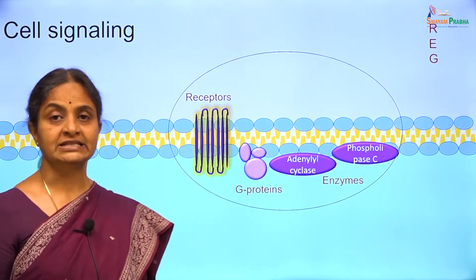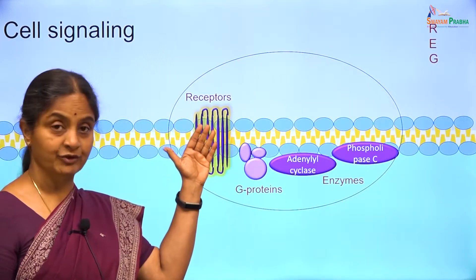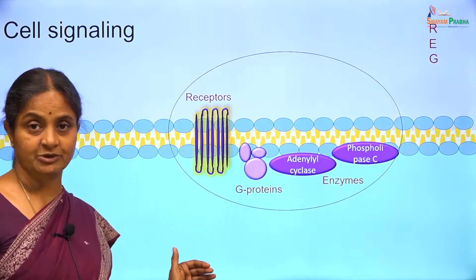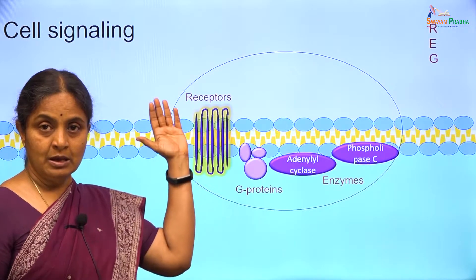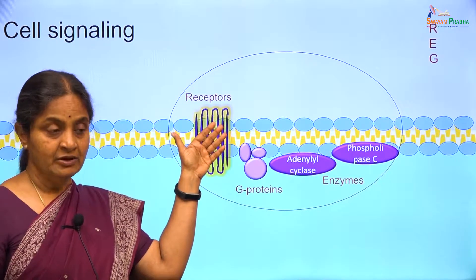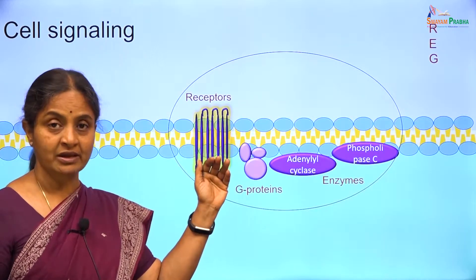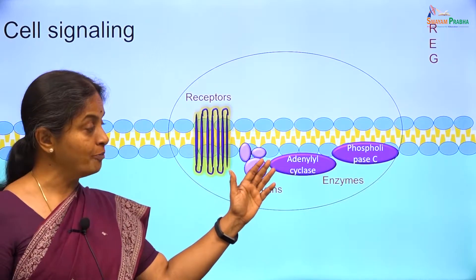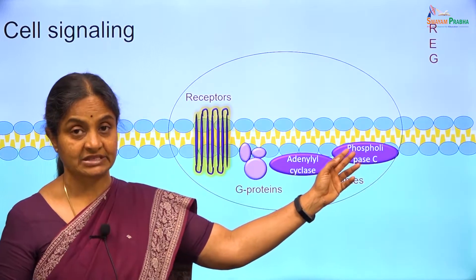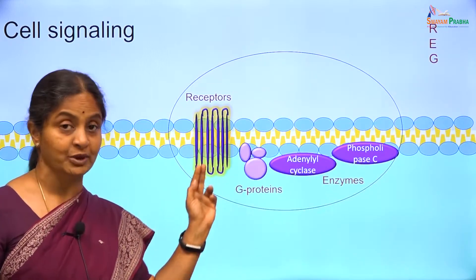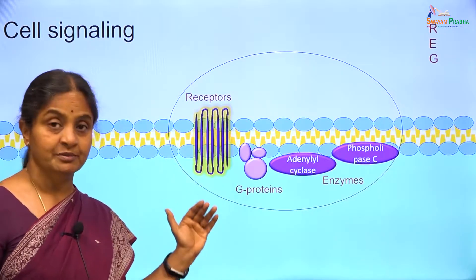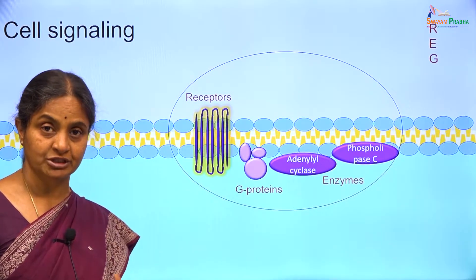While all external signals must bind to a receptor, the receptor can be a membrane receptor or a cytoplasmic receptor. When the external signals bind to a membrane receptor, further steps along the pathway may or may not involve G-proteins and membrane enzymes. There may be other pathways through which a membrane receptor brings about a cellular response.